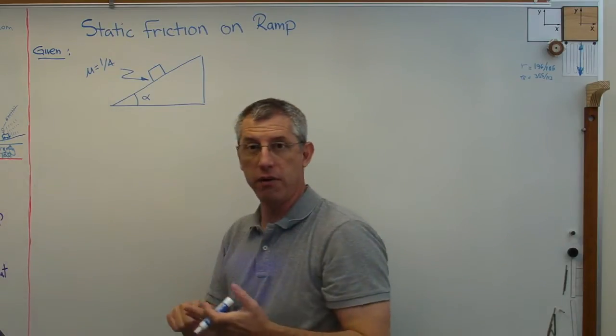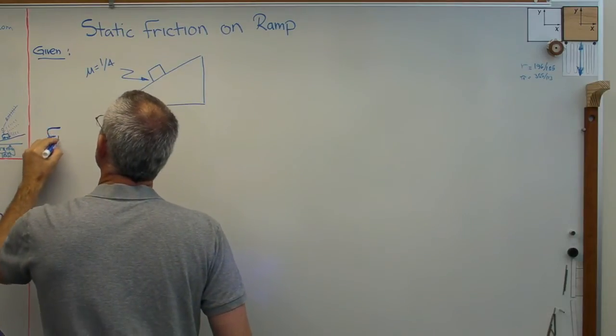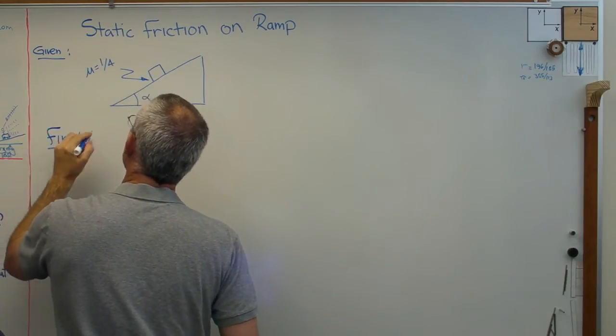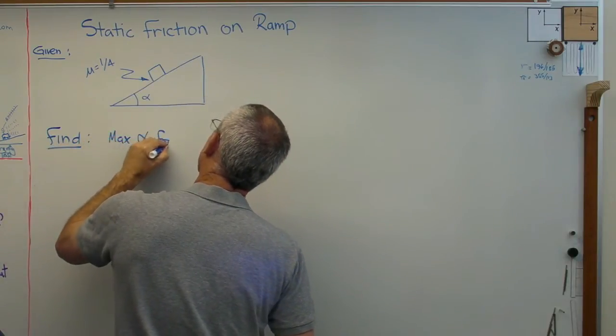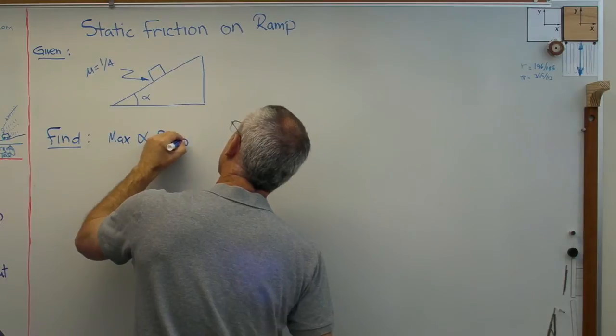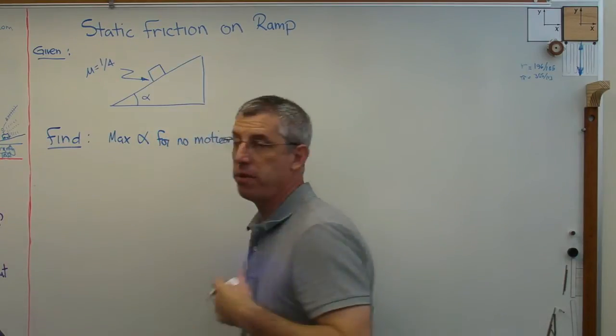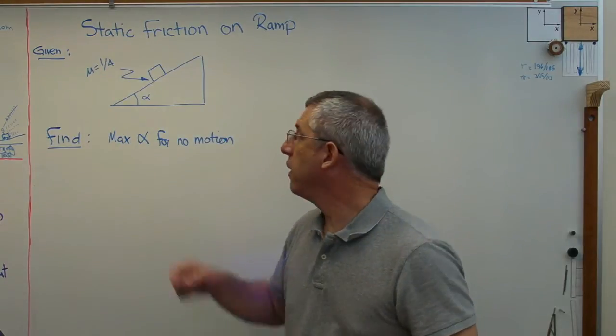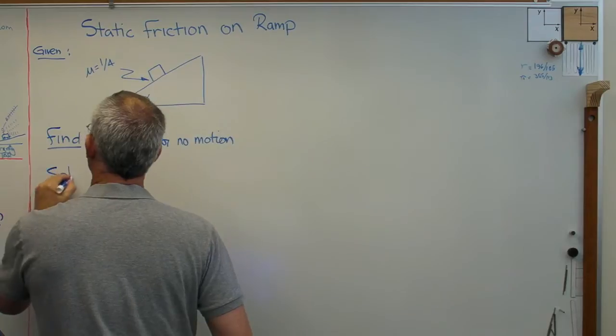So what's the largest value of alpha that you could have with the box not sliding? So we've got a given. Remember, given, find, solution, answer. So we'll have to write find, otherwise we won't know when we're done with the problem. Max alpha for no motion. Okay, so what's the maximum value of alpha you could have without the box starting to slide? All right, so I'll write solution here.